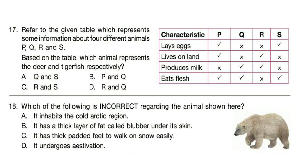Question 17: Refer to the given table which represents some information about four different animals P, Q, R and S. Based on the table, which animal represents the deer and tiger fish respectively? Correct answer is option C — R is deer and S is tiger fish.